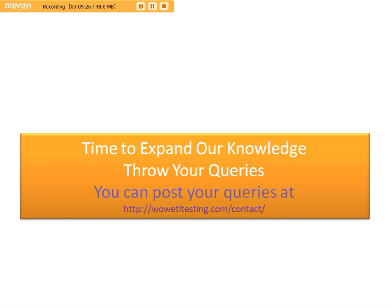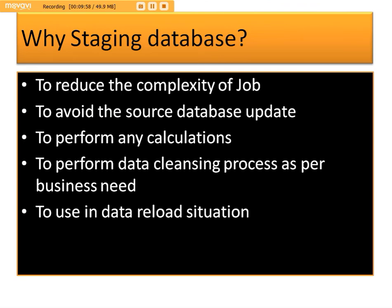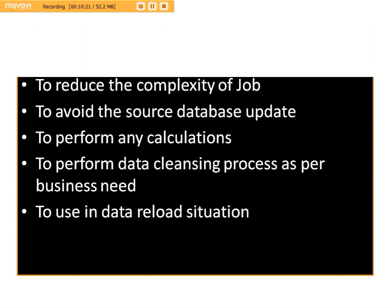So the main data warehouse architecture is very simple: from source, data moves to staging, to data warehouse, and on top of that, for each business line, a data mart will be built. The main reasons why we go for a staging database are multiple: reducing complexity, using it as a backup table, and doing the cleanup activity. That's all about data warehouse architecture.